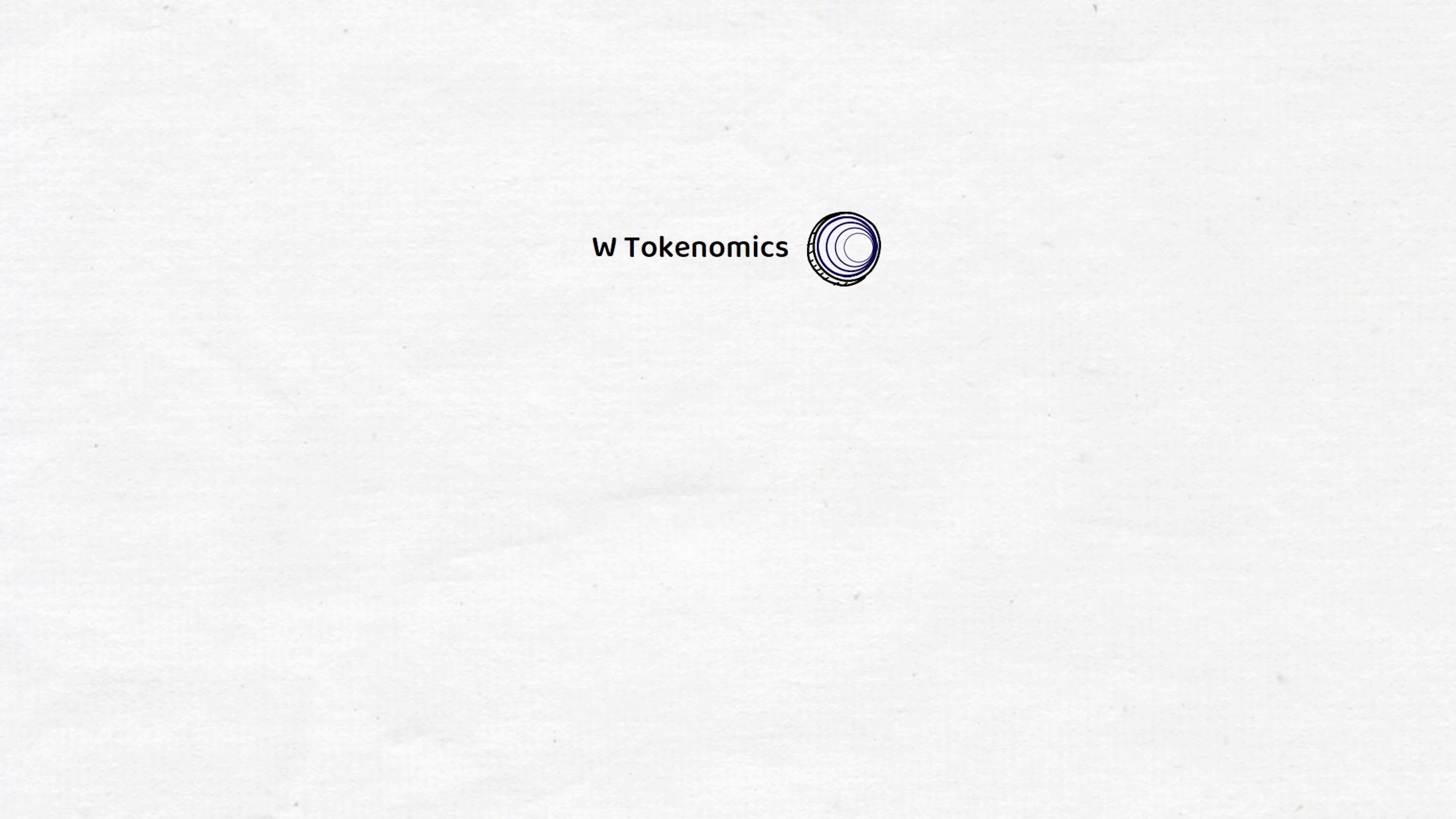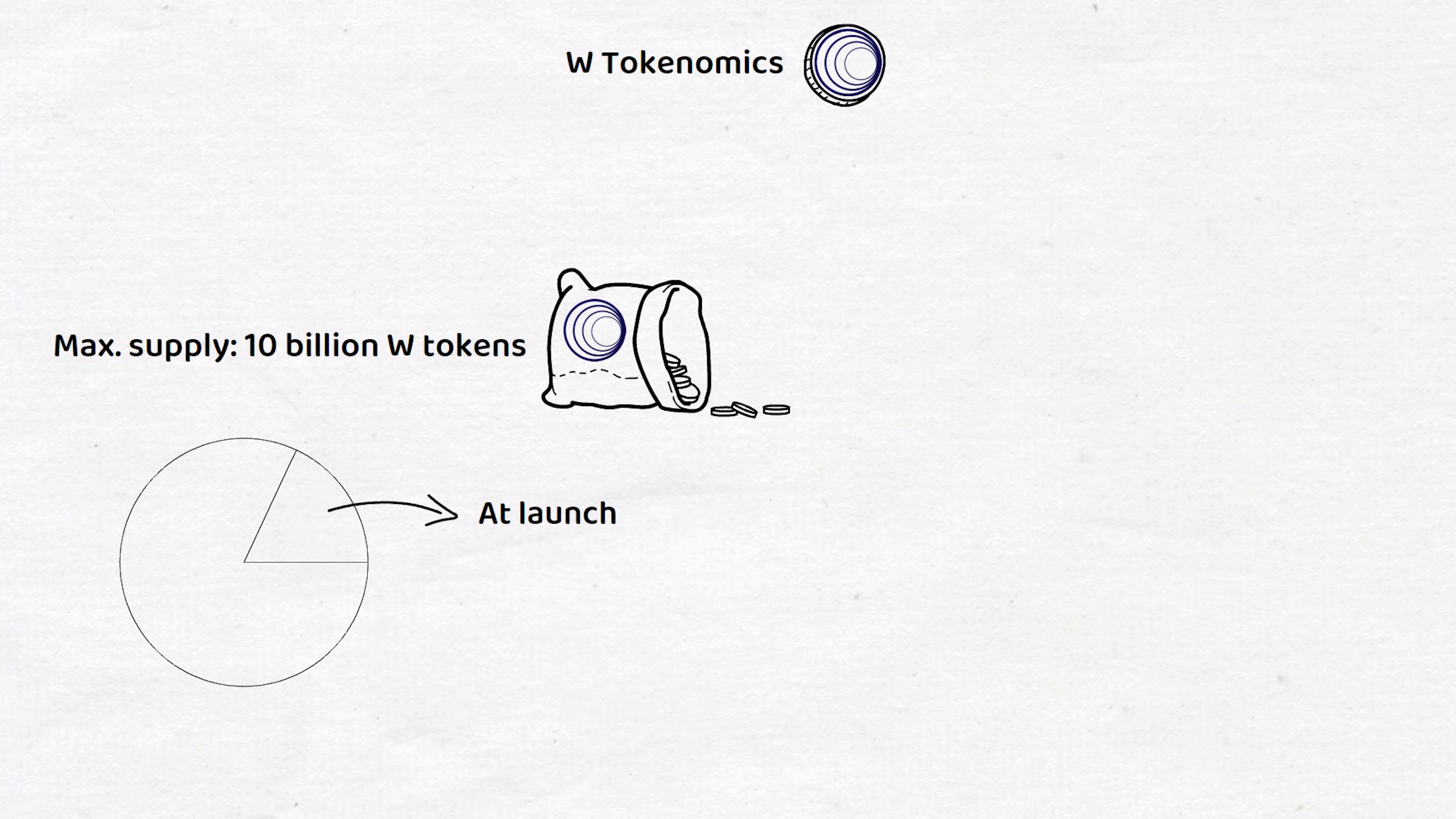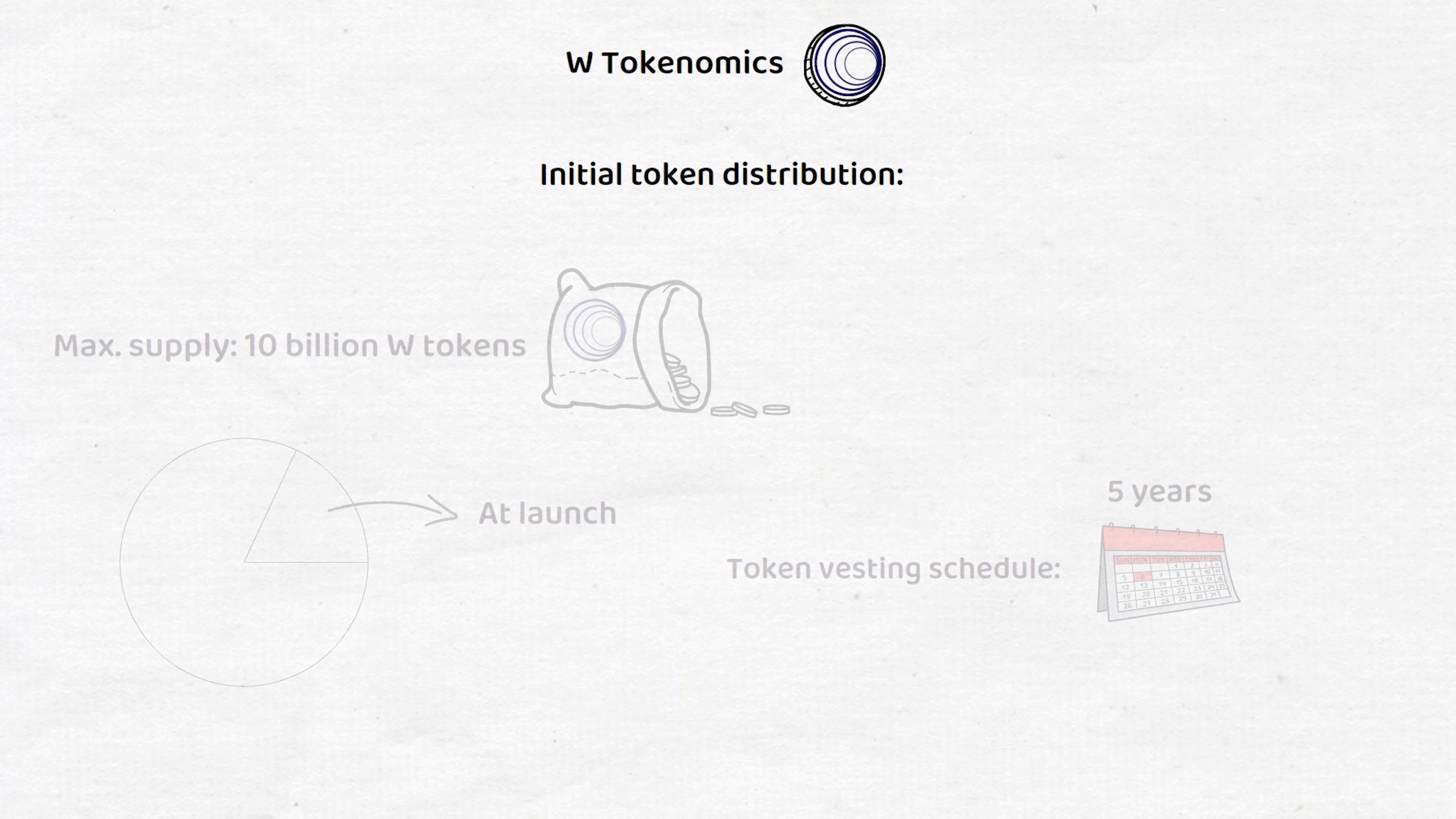In the end, there will be 10 billion W tokens available, though at launch only 1.8 billion were released. By the time all 10 billion W tokens have been released according to their token vesting schedules, which will be completed around five years after launch, the initial token distribution will have looked as follows.